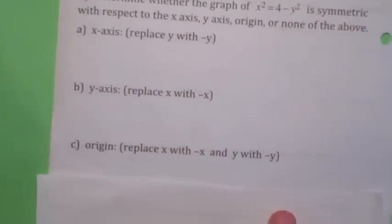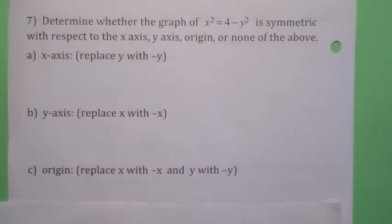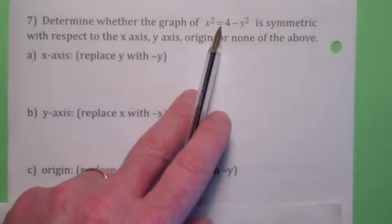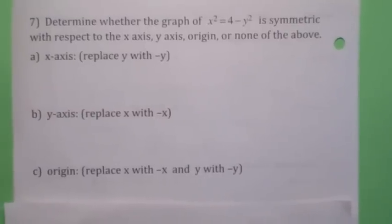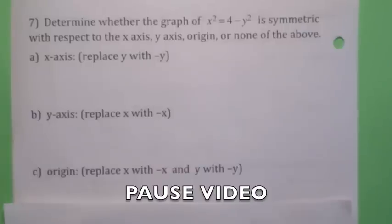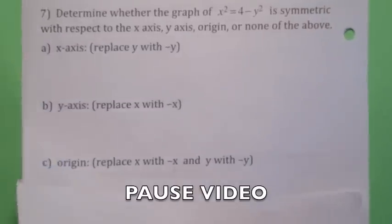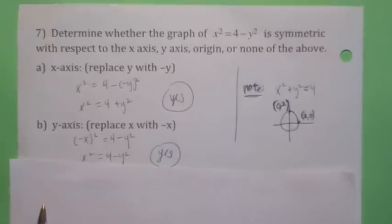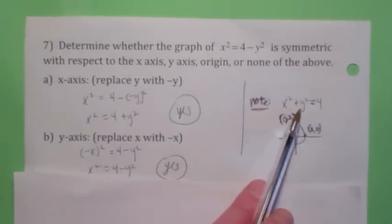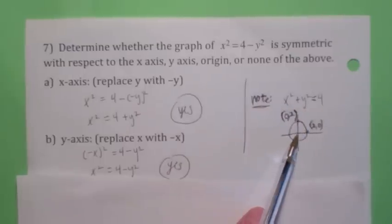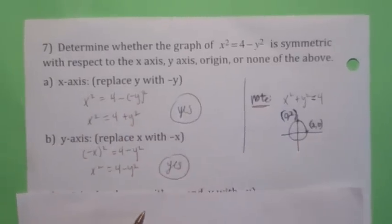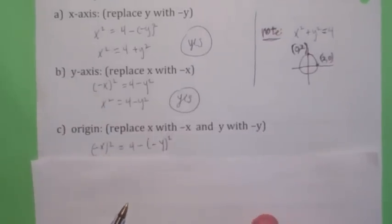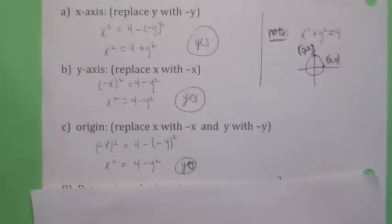The second example: the equation is x squared equals 4 minus y squared. Notice that if you add y squared to both sides, this is just a circle centered at (0, 0) with radius 2. So clearly it's symmetric with respect to the x-axis, y-axis, and origin. Replacing negative y for y gives the same equation back; replacing negative x for x gives the same equation back; replacing both gives the same equation back. It's symmetric with respect to all three.